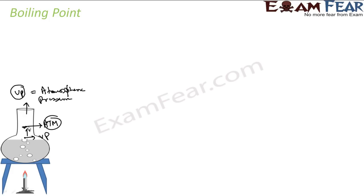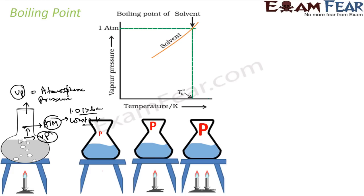A liquid will boil only when the vapor pressure here equals the atmospheric pressure. Now the atmospheric pressure is always constant — at least for Earth — and that is nothing but 1.013 bar at normal room temperature. This is the constant. So this is something we need to increase — we increase vapor pressure by heating.